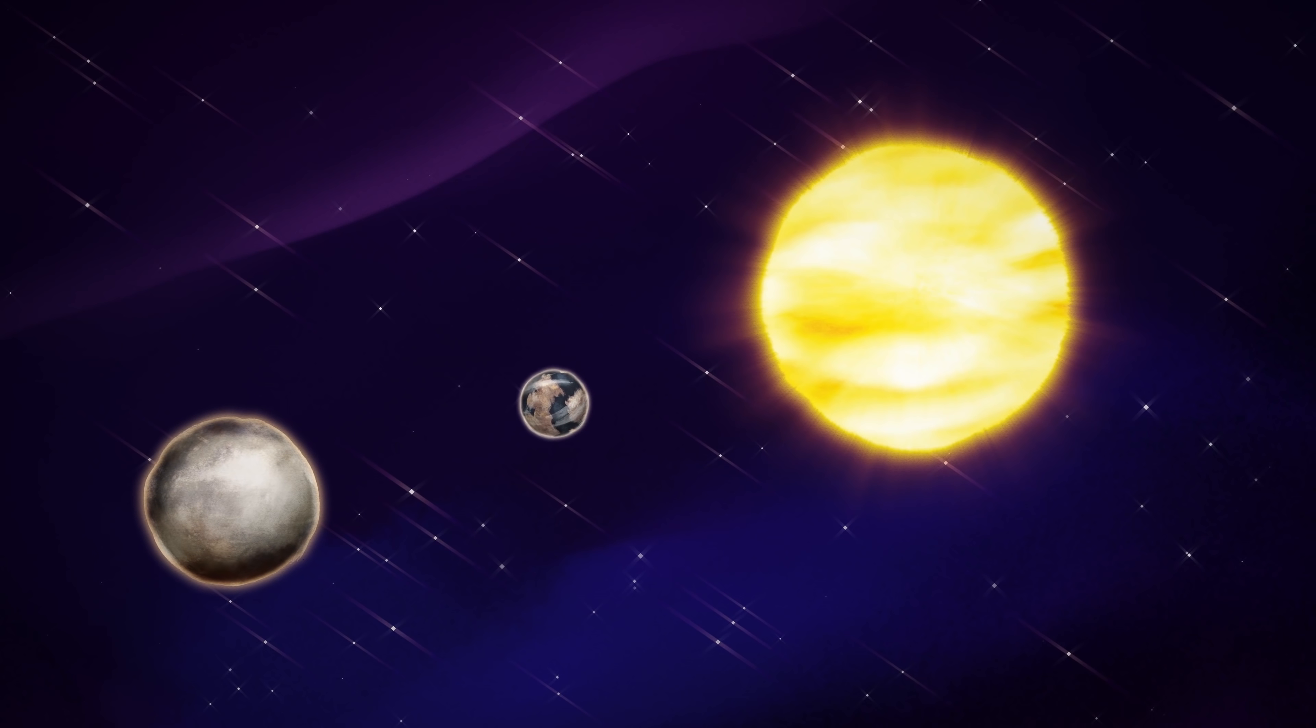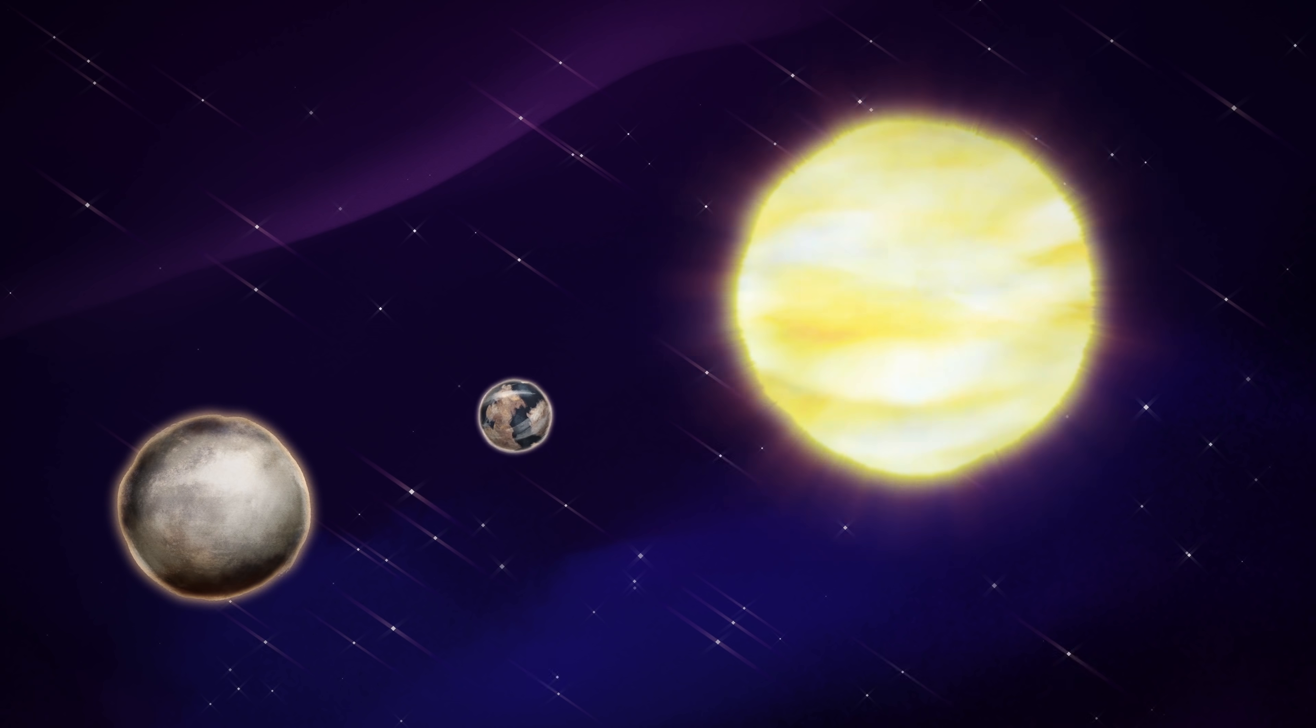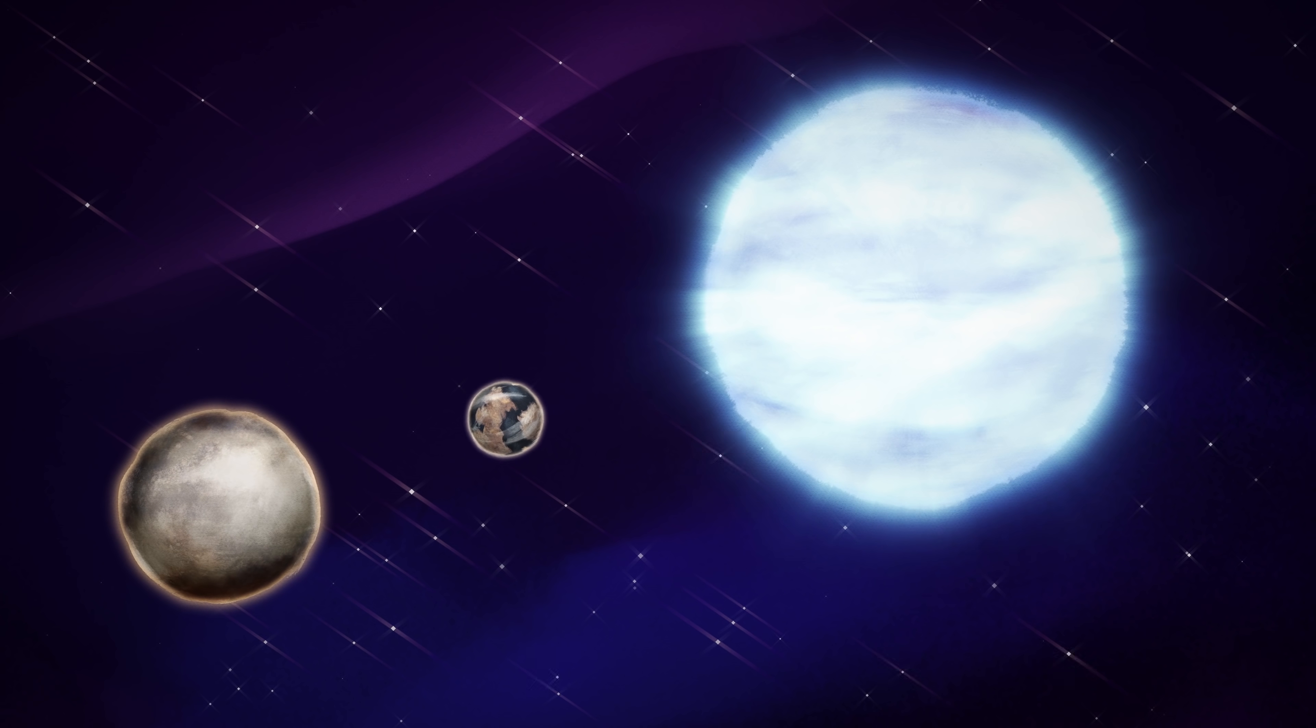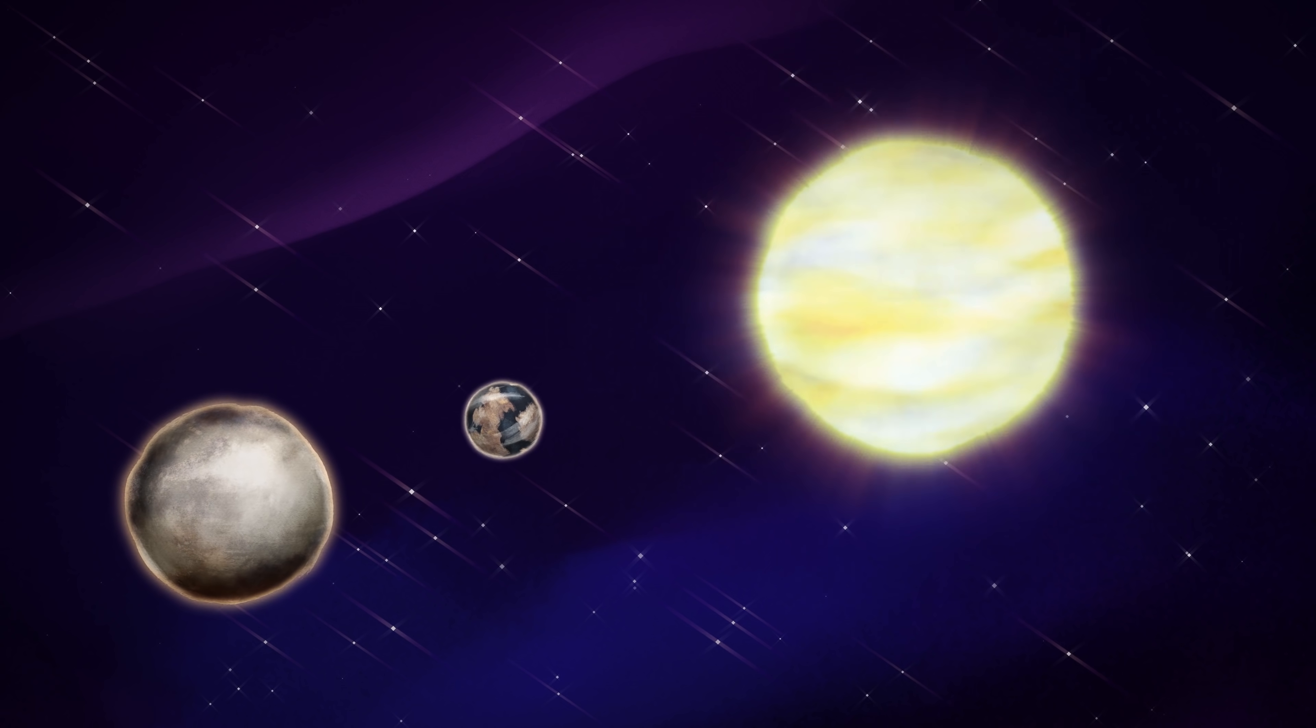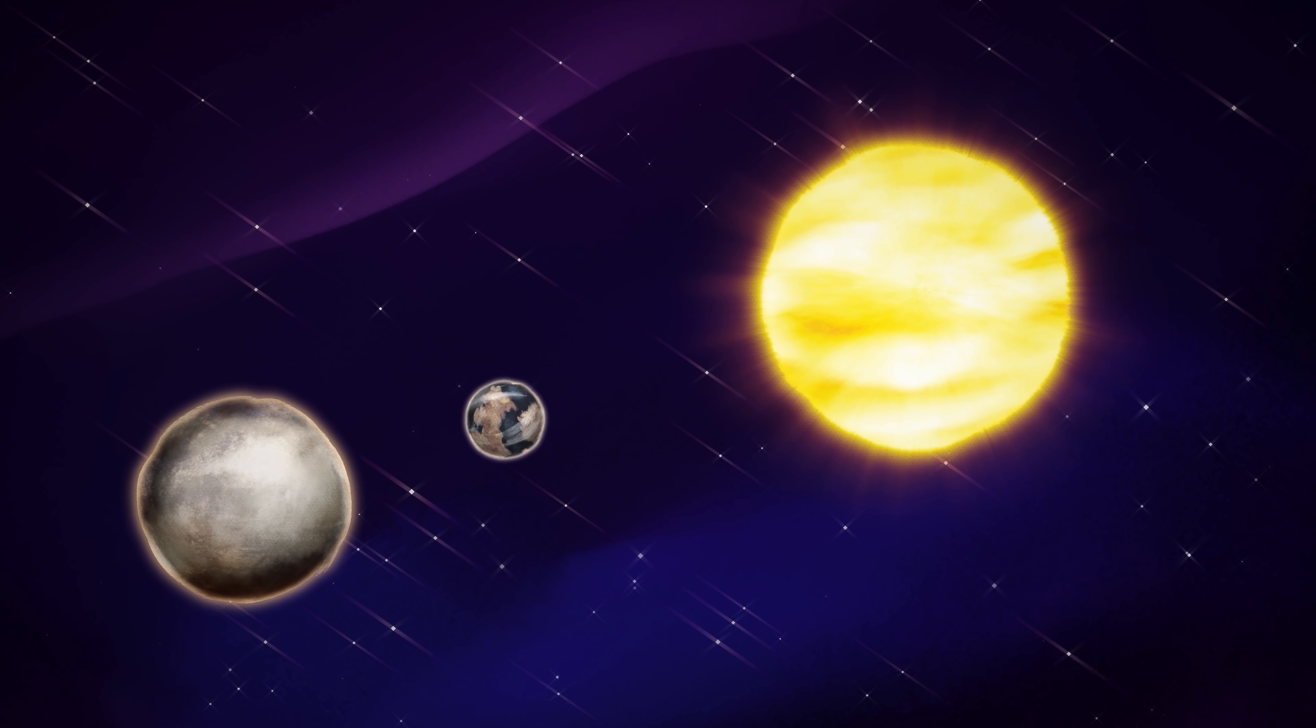Each of the stars you see in the night sky is the sun for any planets that orbit around it. But not all stars are created equal. Bigger stars burn way brighter and hotter and don't last as long. Smaller, fainter stars like our sun and red dwarf stars last much longer.